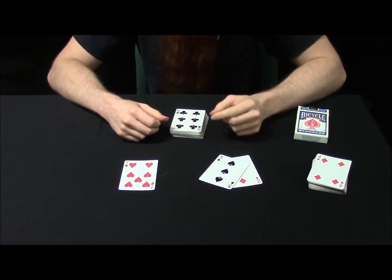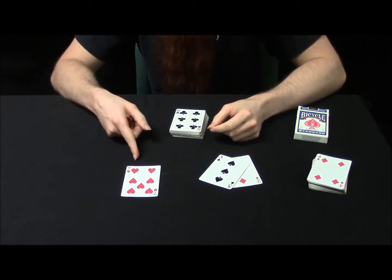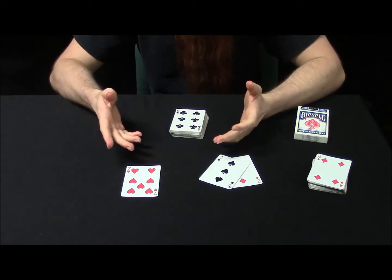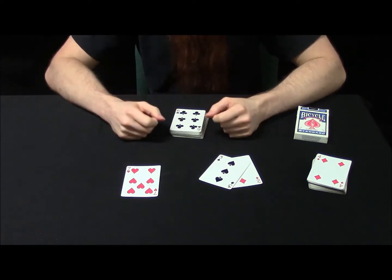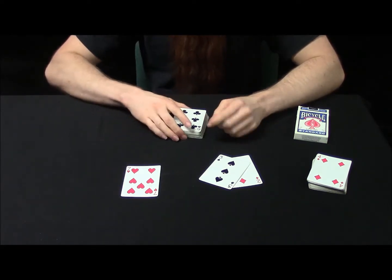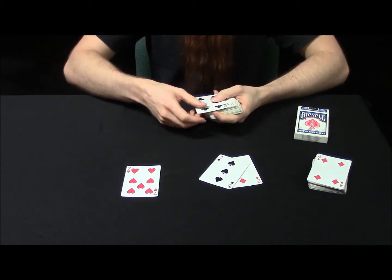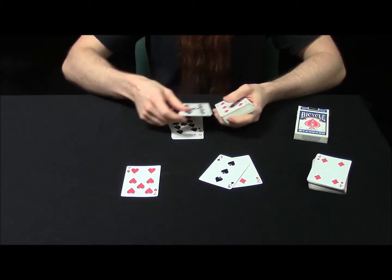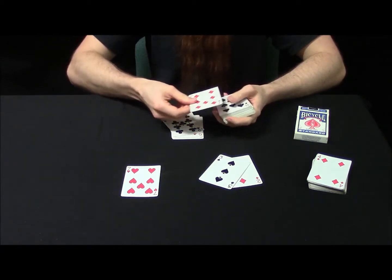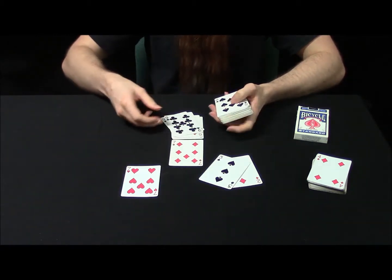So if the mate to this seven of hearts, which would be the seven of diamonds, is five cards down in this shuffled blue deck, I think that would be pretty remarkable. So let's take a look. There's one, two, three, four, and five cards down the seven of diamonds.